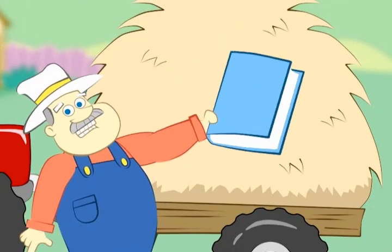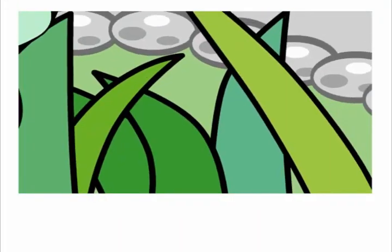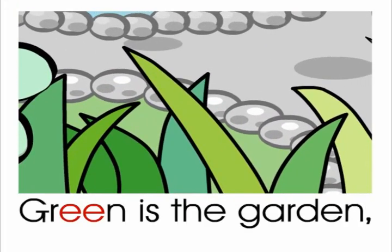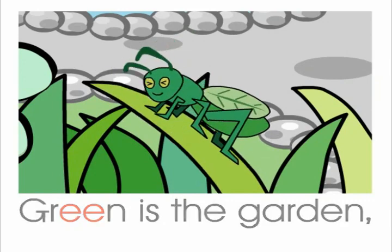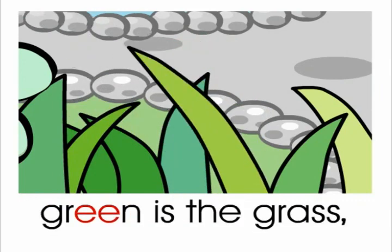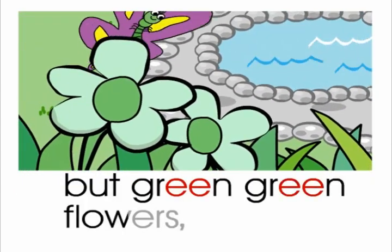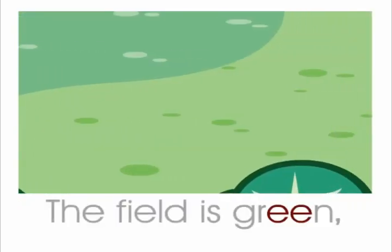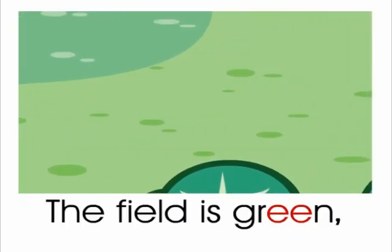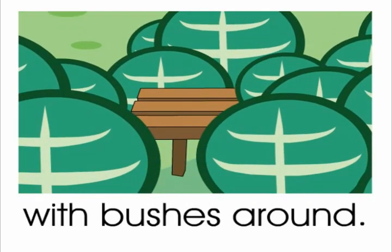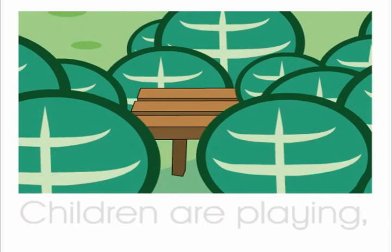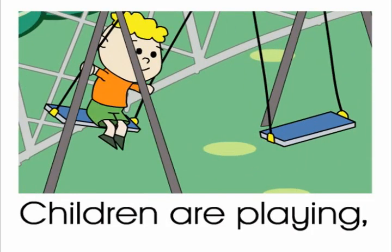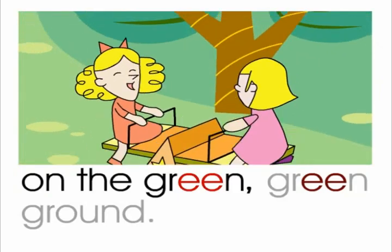Let's practice our reading. Green is the garden. Green is the grass. But green, green flowers have you ever seen? The field is green with bushes around. Children are playing on the green, green ground.